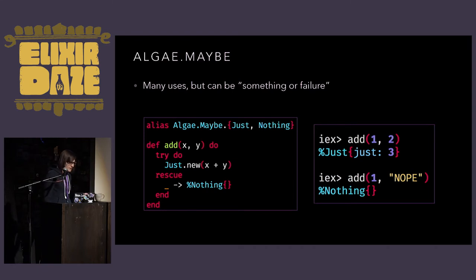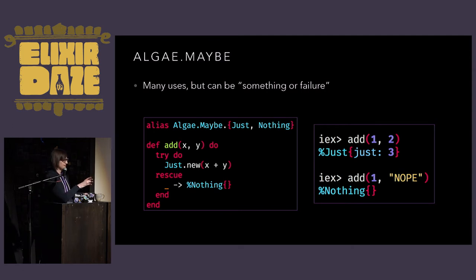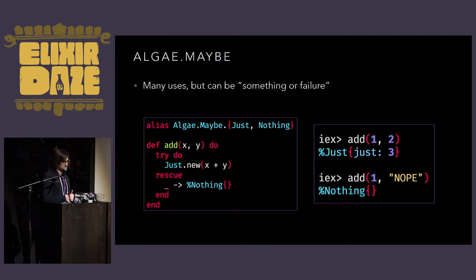One use case of the Maybe idea is capturing the idea that something went wrong or that you have failure. You don't really care what the failure is, but you want to just propagate the fact that you have no valid result back. Don't actually wrap things in a try-rescue block, but this gives you the rough idea. So I'm going to try to add two things together — if that works, I get back a Just; if that blows up, give me back a Nothing and just swallow the error. If I add two numbers, I get back Just three. And if it blows up, I get back Nothing.